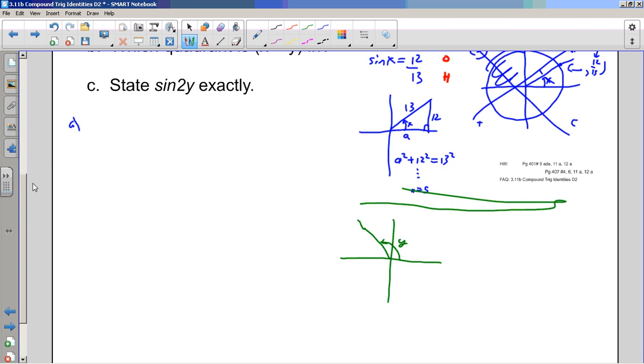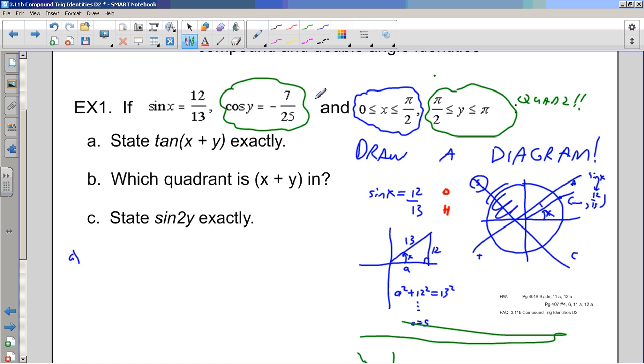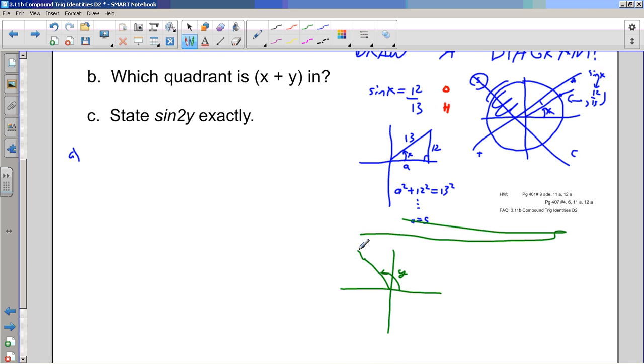And again, if I think of it old school, this is going to be the adjacent, and this is the adjacent, and this is the hypotenuse. Because the cos. Sokotoa. Right? Adjacent is negative 7. Hypotenuse is 25. And then all I need to do is find the opposite side, and then I'll have everything about this triangle. Right? Okay. Well, the opposite squared plus the a squared plus b squared equals c squared. And again, you can fill in the details. I'm going to get always 24.